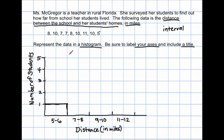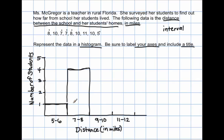Next, 7 through 8. I'm looking for either a 7 or an 8 or any number in between. I have 1, 2, 3, 4 — no more. So 4 students live between 7 and 8 miles from school. And again, these bars touch — they're not separate.